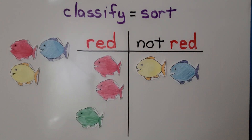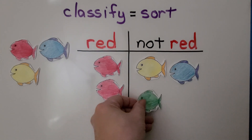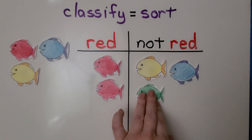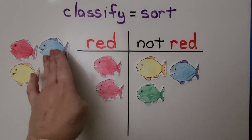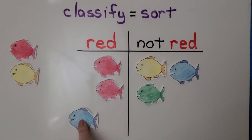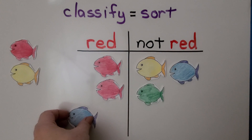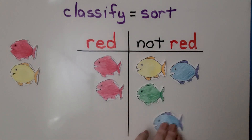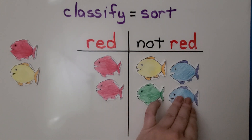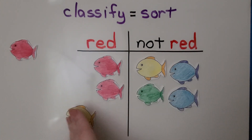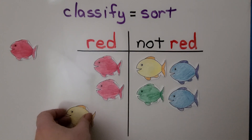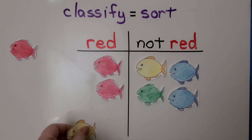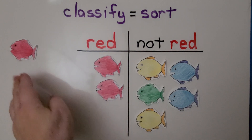How about this fish? This fish is green. It goes on the not-red side. And this fish — that's another blue one. That's not red. We can put it over here. This fish is yellow. That's not red, so it can go on the not-red side.